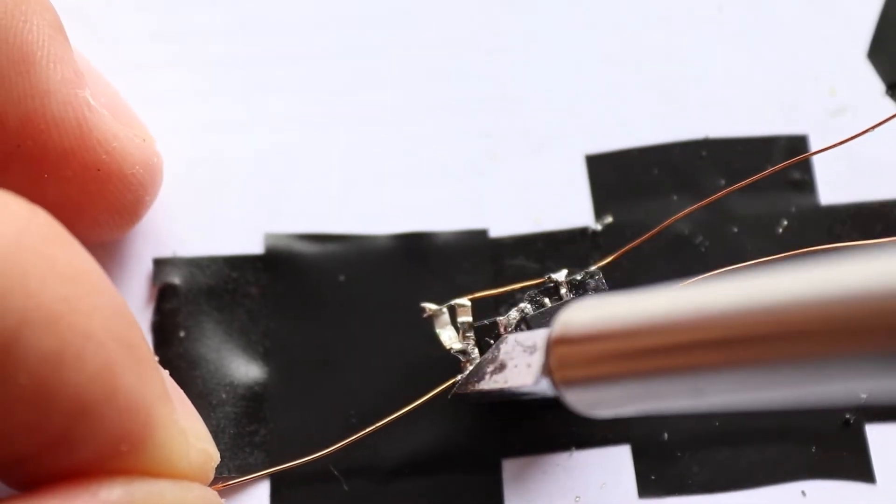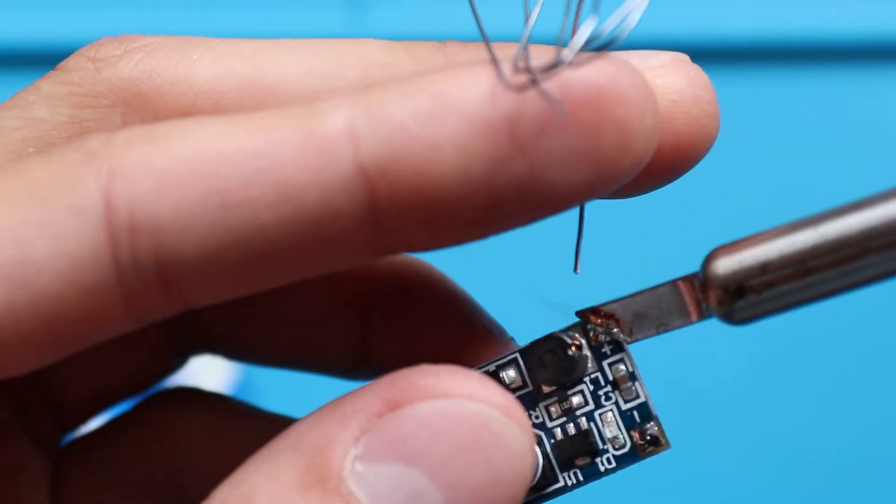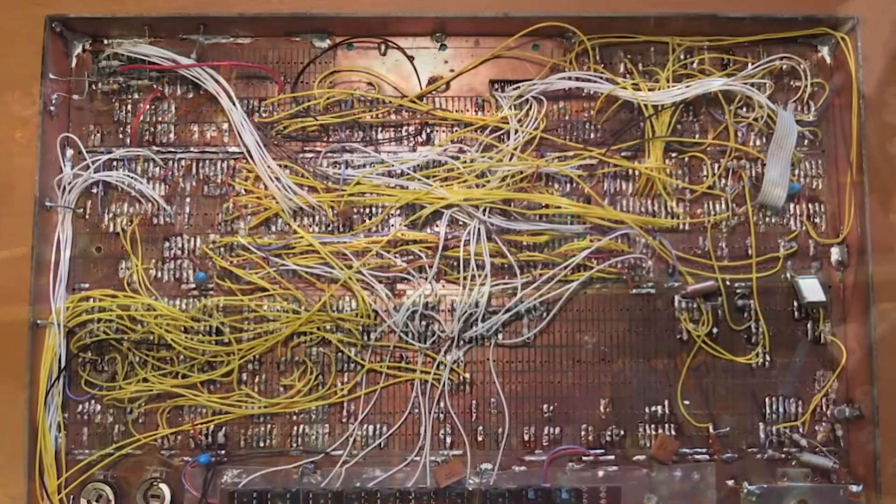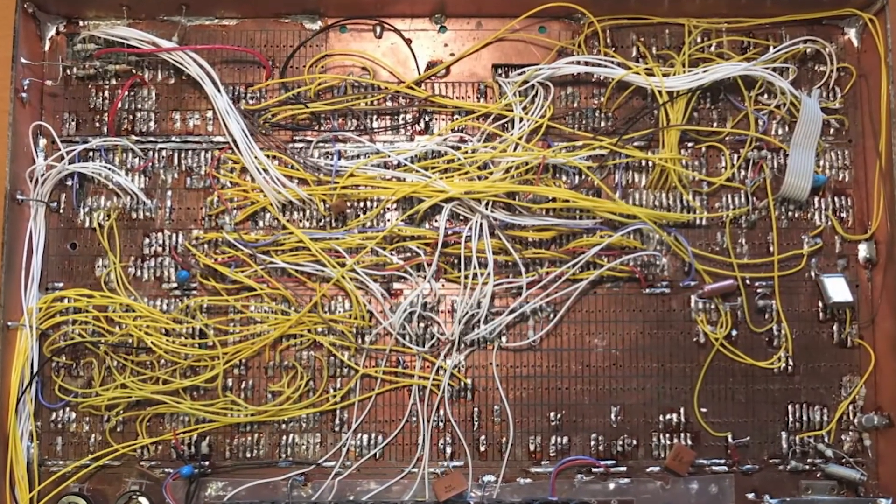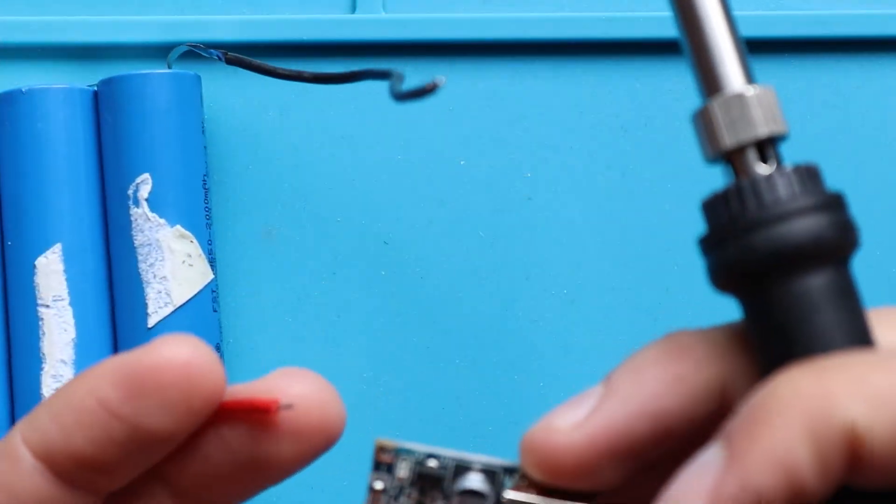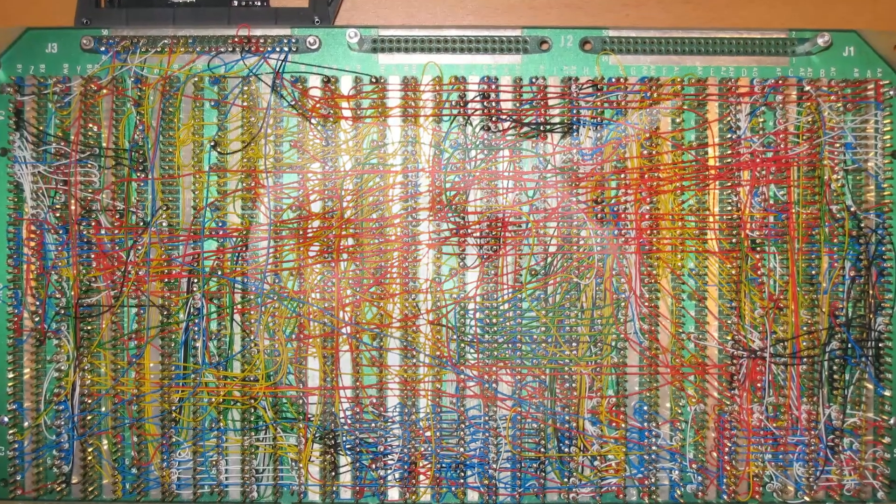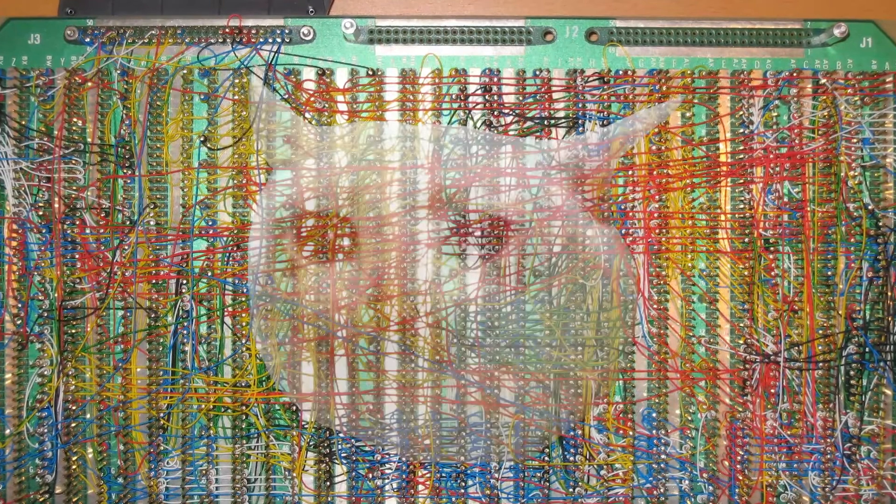So I shall start with some backstory. Point-to-point construction was a very popular manufacturing technology before the PCB era. If you open any old device, I mean really old, you would find there a bunch of wires going here and there connecting components. And the first thing that is probably on everyone's mind is good luck with repairing if something is broken or if you make a mistake in the soldering process.